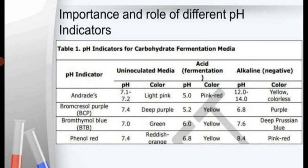Phenol red: at pH 7.4 (un-inoculated), it has a reddish-orange color; at acidic condition pH 6.8, it is yellow; at pH 8.4, it is pink-red. We can use any one of these four indicators. For the sugar fermentation test: Andrade indicator shows acid production by pink-red color; bromocresol purple shows acid production by yellow color; bromothymol blue shows acid production by yellow color; phenol red shows acid production by yellow color.